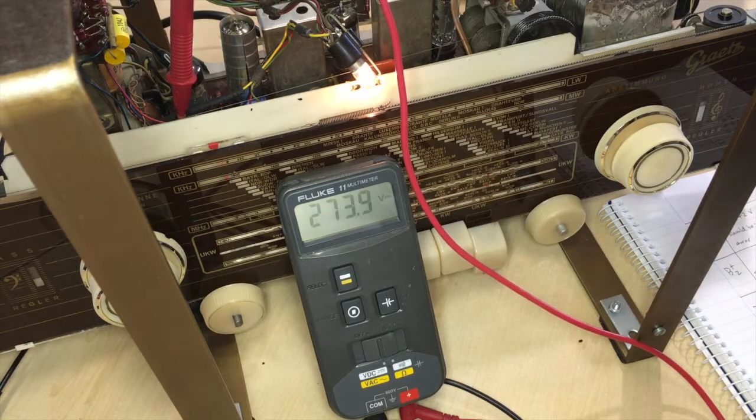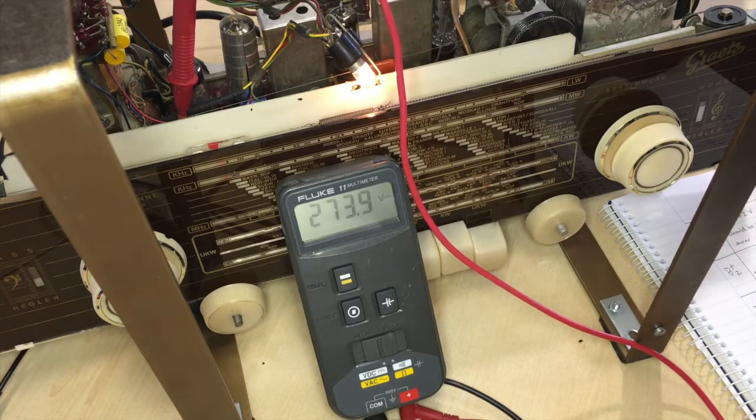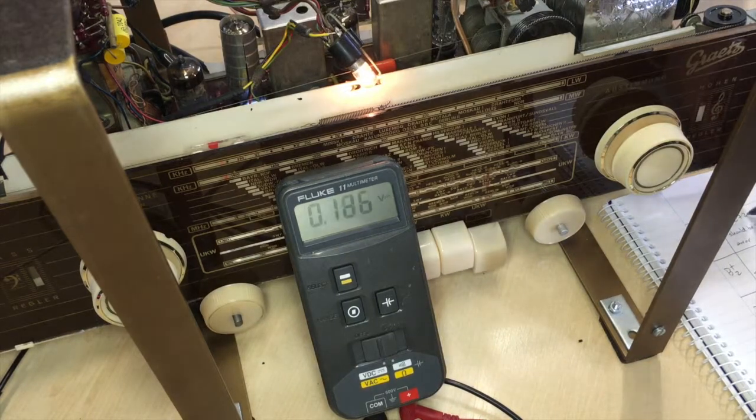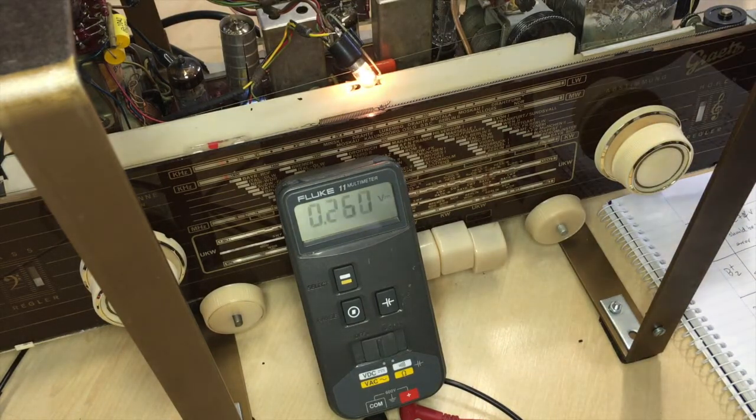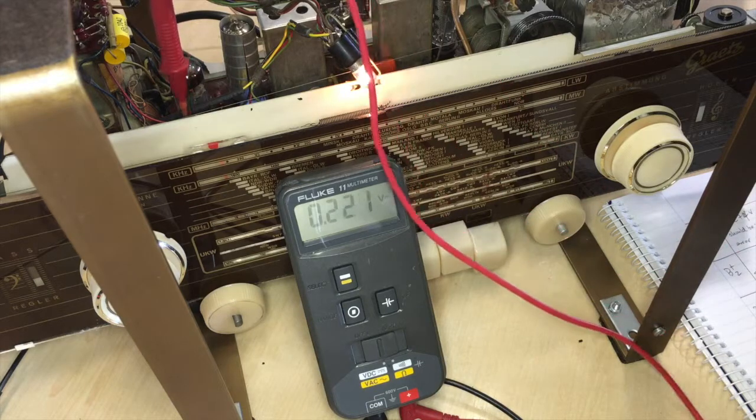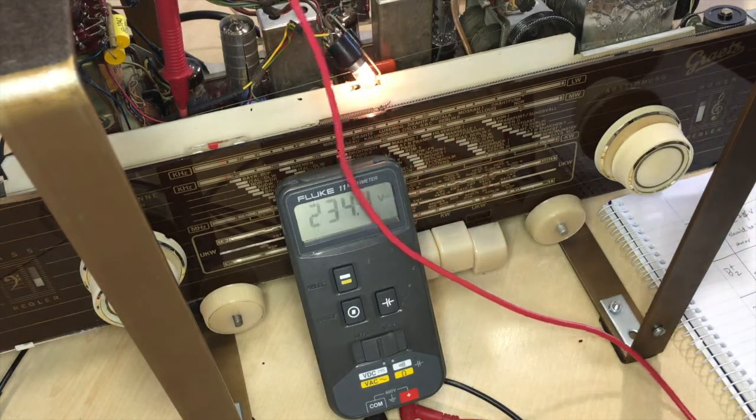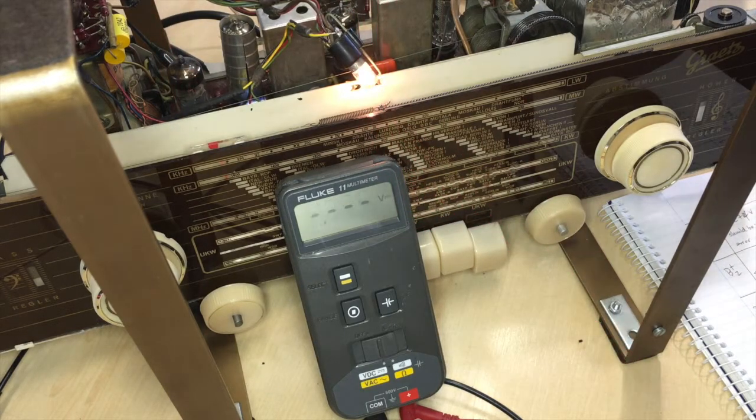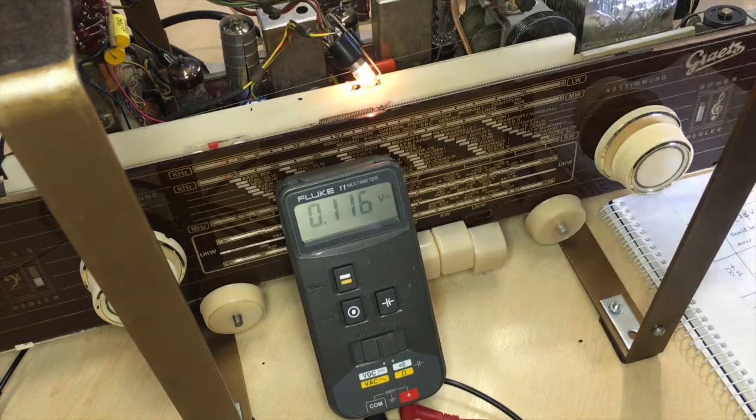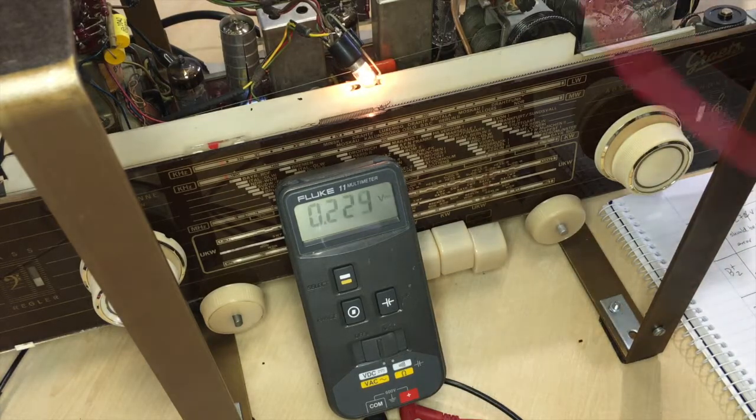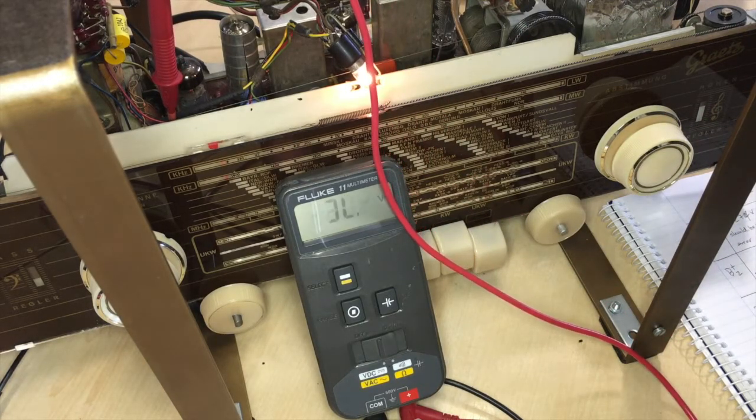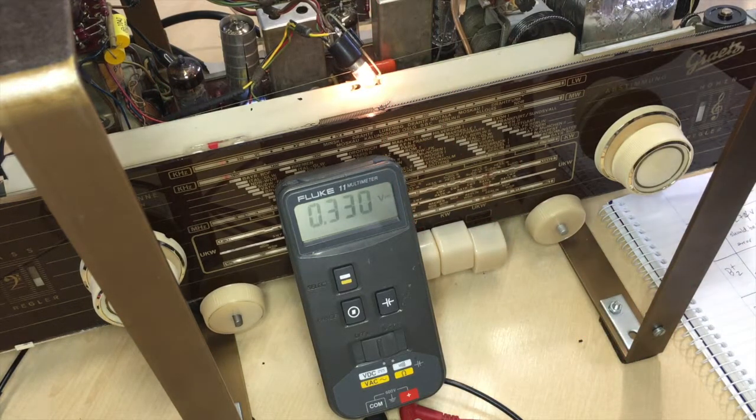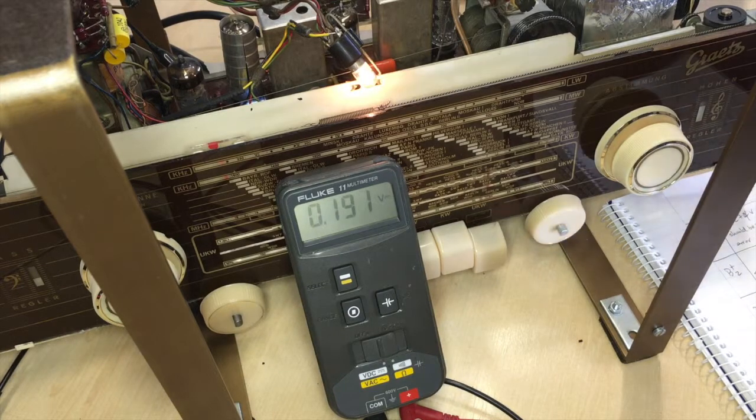So the first B+, 273.9, 274. So 274, it should be 260. The second B+, 234, 234 volts, 234 and it should be 224. The third one, 230, 230 and it should be 215. So we have slight variations there. Let's look at this on medium wave.